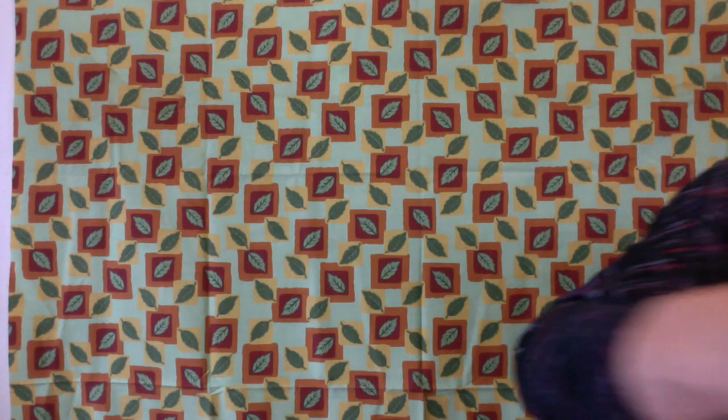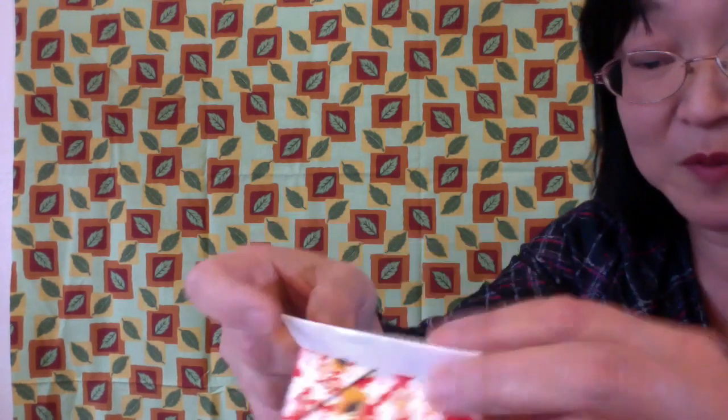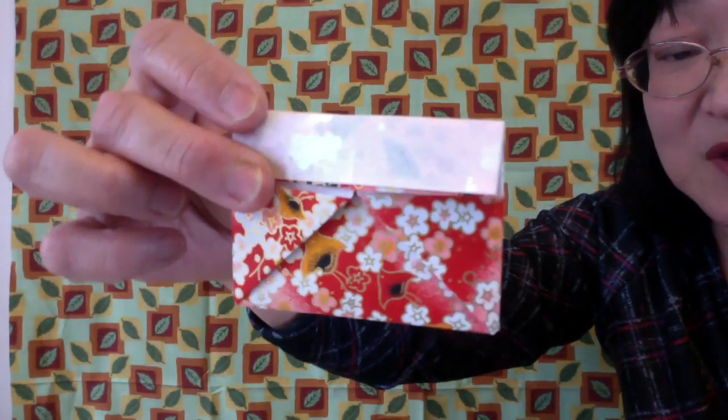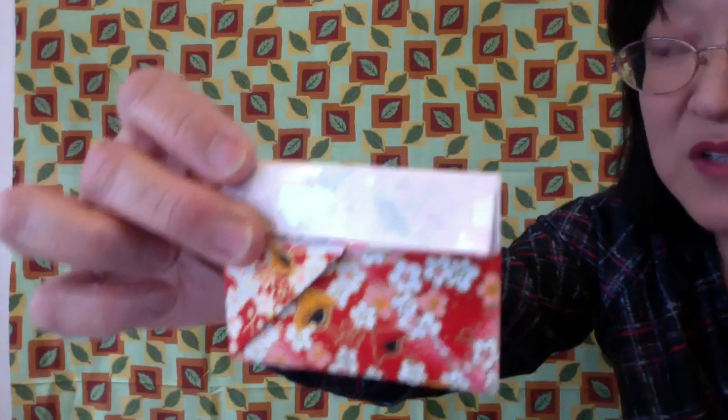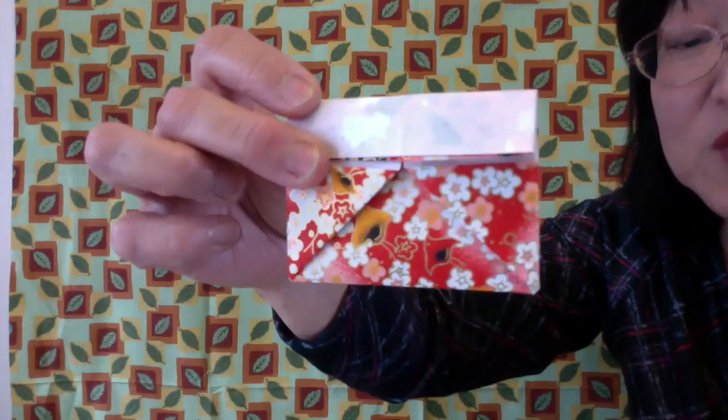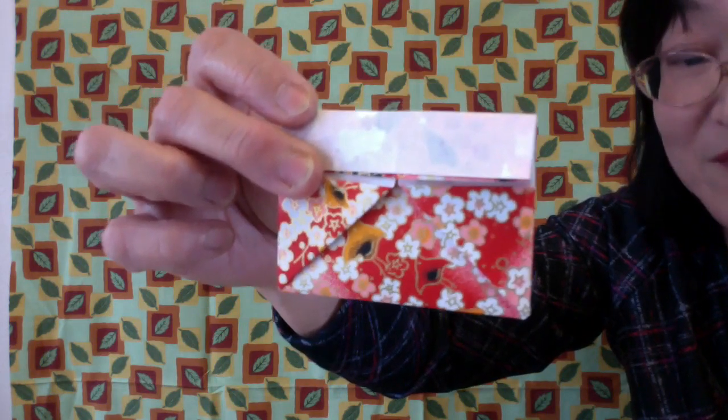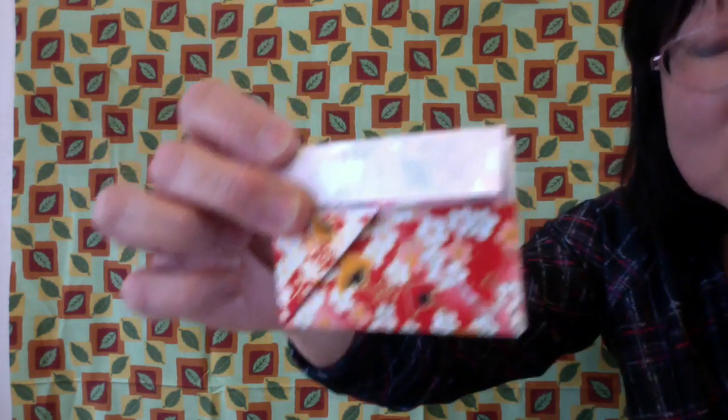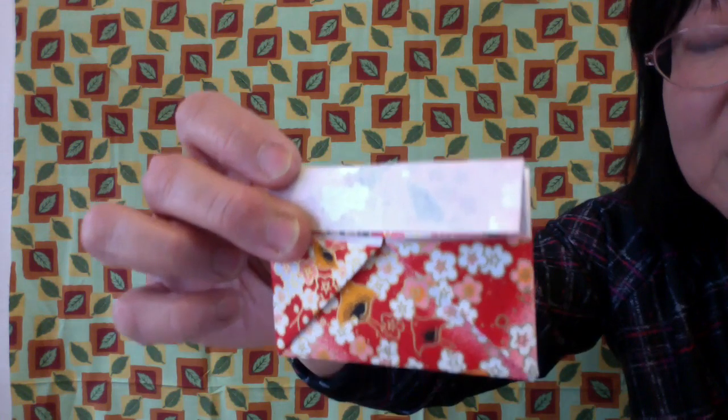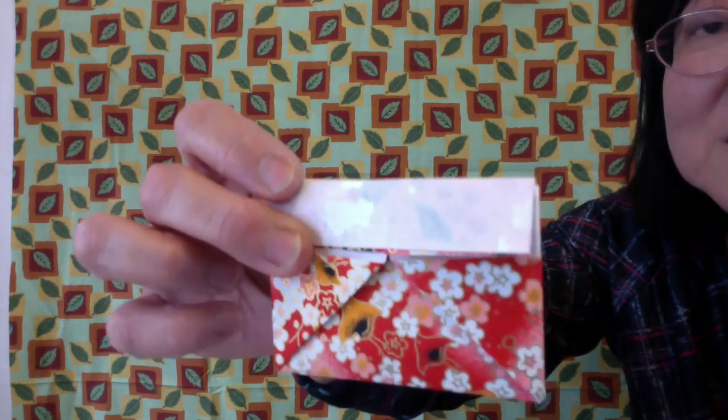Now if you start with a nice origami paper, you can make something this pretty. But it does not have to be origami paper. You can use any colored paper or even a wrapping paper. But make sure when you start it, the paper starts as square.